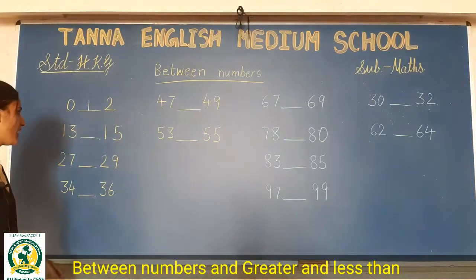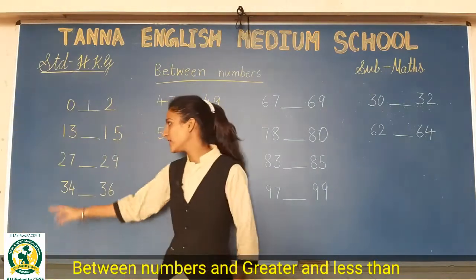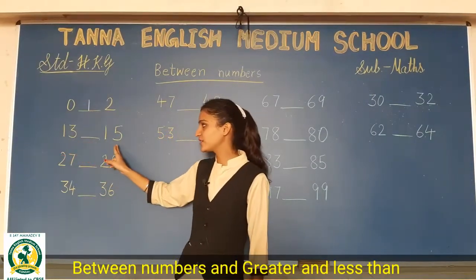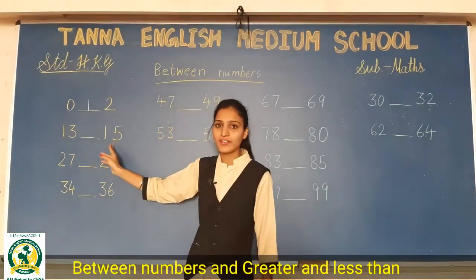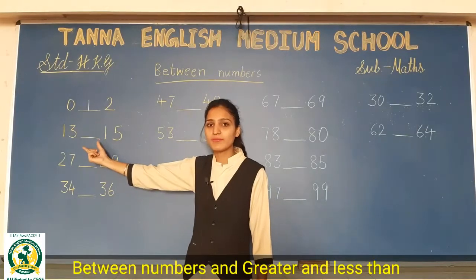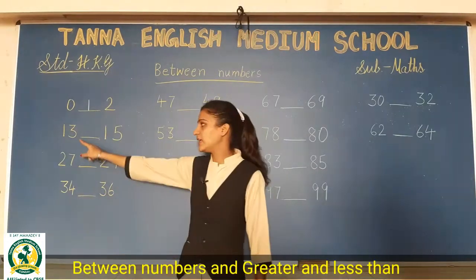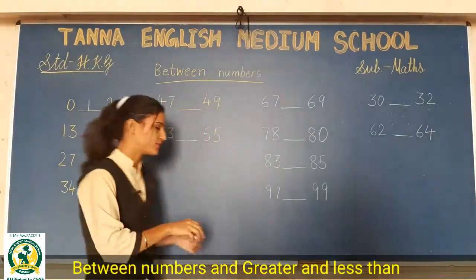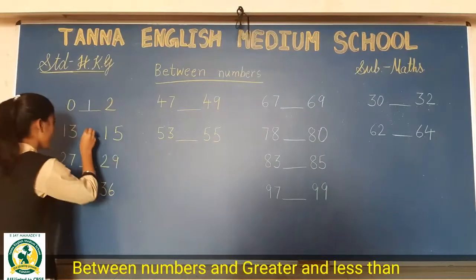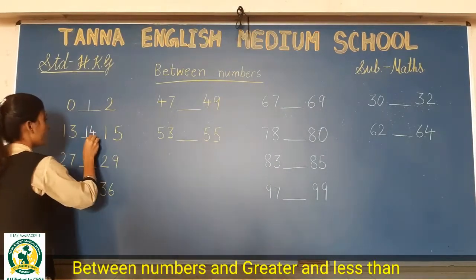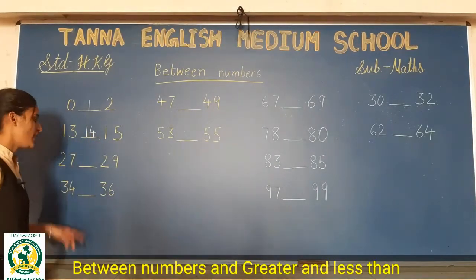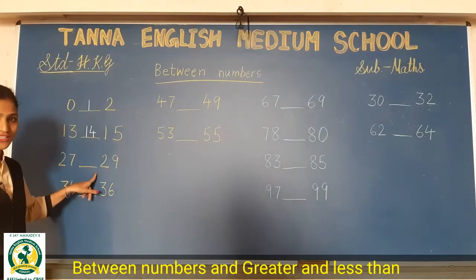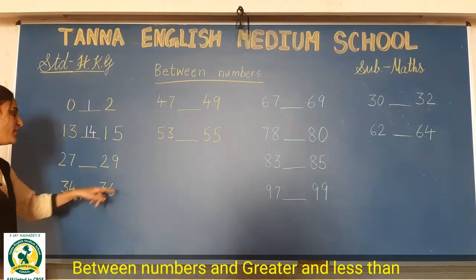Right? And then next is 13 dash 15. So, what comes in between? 14. 13, 14, 15. So, write here 14. Then 27, 28, 29.